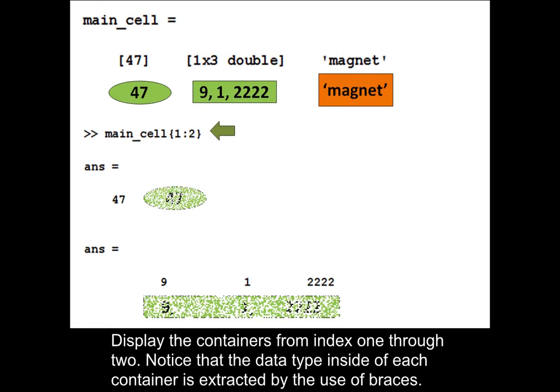Display the containers from index 1 through 2. Notice that the data type inside of each container is extracted by the use of braces.